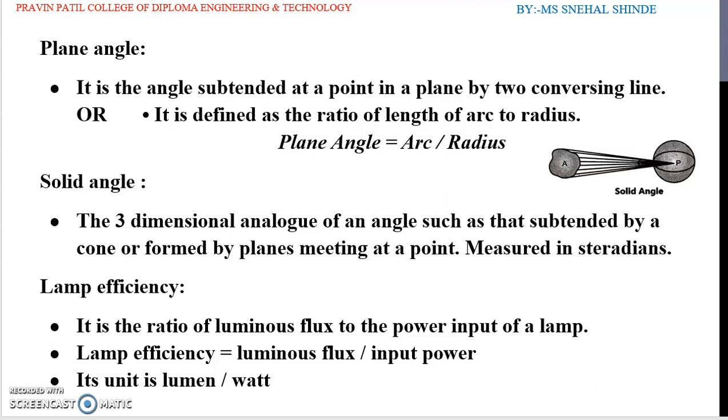Next definition is the solid angle. The three-dimensional analog of an angle such as that subtended by a cone or formed by planes meeting at a point measured in steradians. Consider an area A relative to the point P if all the points on the boundary of area A joined to the P, a cone like shape is formed at P at an angle subtended by the area A and the point P. This is known as a solid angle and it is measured in steradians.